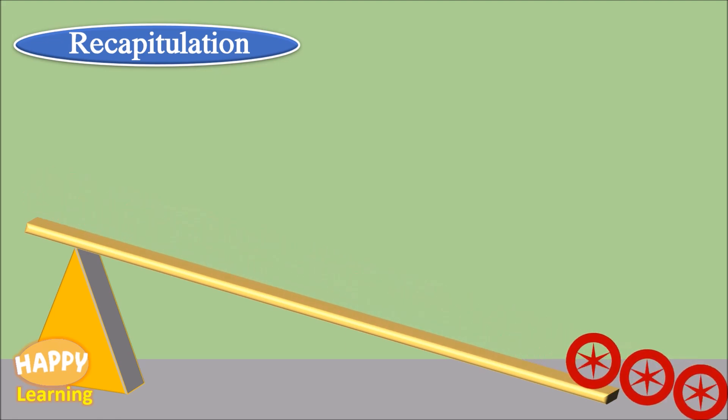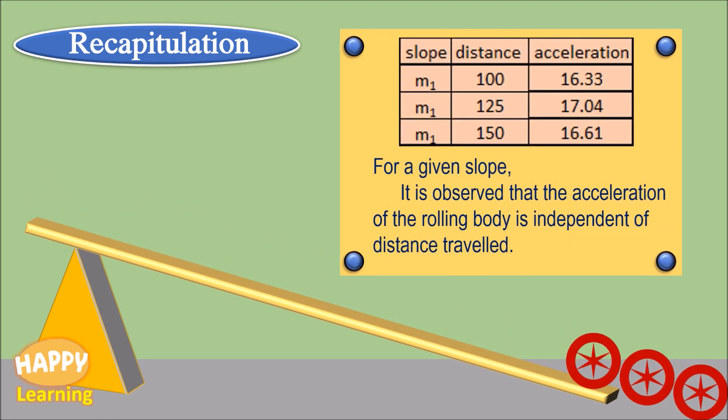Point 3. Distance versus acceleration are tabulated. For a given slope it is observed that the acceleration of the rolling body is independent of distance traveled.